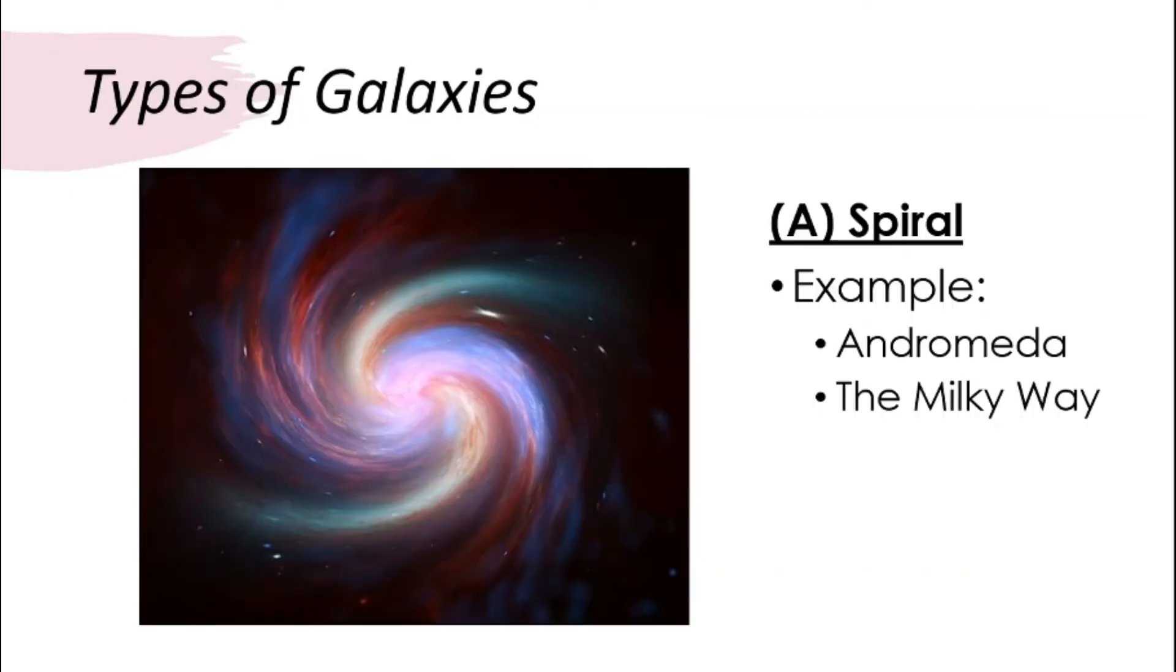This is a spiral galaxy. It looks like a spinning top. Some examples of spiral galaxies that scientists have identified are Andromeda and the Milky Way.